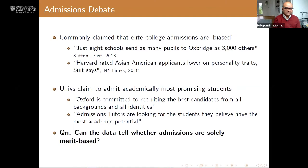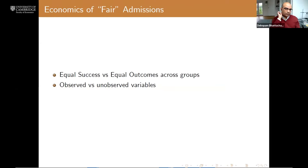So what's the story here? It's commonly claimed that elite college admissions are biased. A quote from the Sutton Trust in 2018 says that just eight schools sent as many pupils to Oxford as 3,000 other schools. This is a fairly international issue—Harvard admissions have been subject to criticism recently. On the other hand, universities say that places like Oxford and Cambridge are trying to get the best candidates irrespective of backgrounds. So the question we're trying to address is: can we look at real micro data on admissions and how students do after they get admitted to answer whether admissions are actually merit-based?